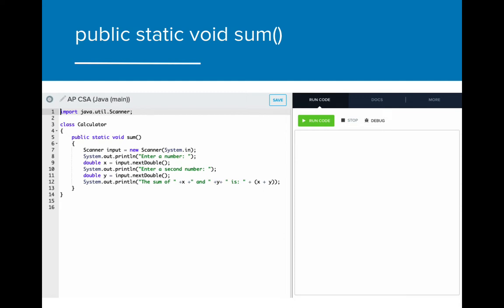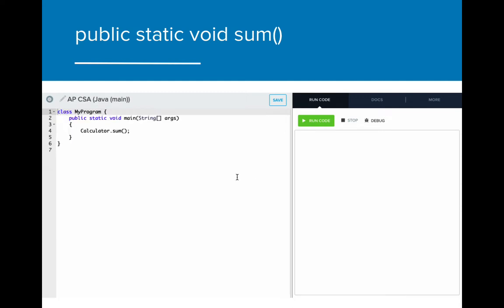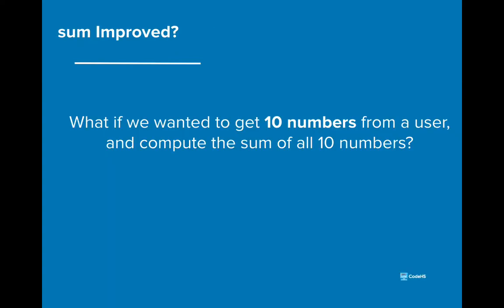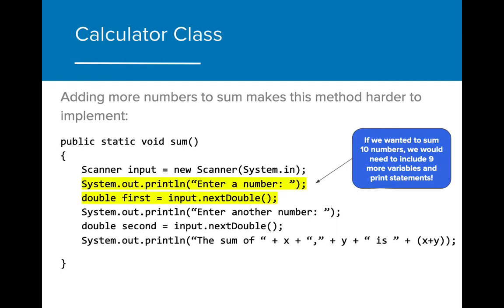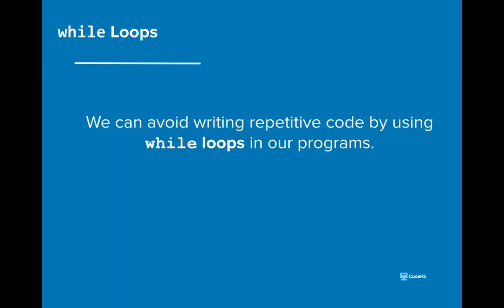Here's a working example of the static method sum we created. Our method is great for adding two numbers, but often we want to add more than two values together. With our current method, that actually proves to be pretty difficult. If we wanted to add more values to the total sum, we would have to add a new print statement and a new call to scanner every single time we wanted to add a value. That would be a very tedious process. Luckily, we can avoid writing repetitive code by using while loops in our programs.